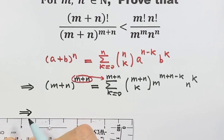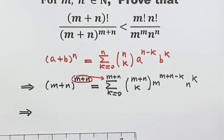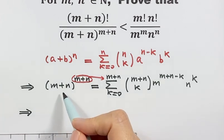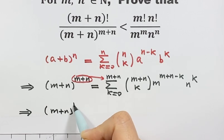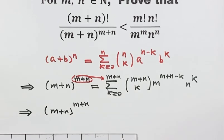Because m and n both are natural numbers, they are bigger than 0. So (m plus n) to the power (m plus n) is bigger than 0.